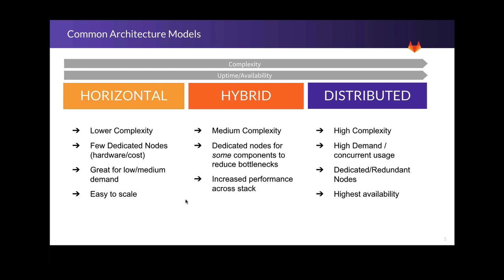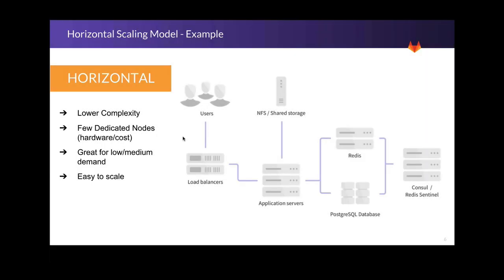We have categorized the different architectural approaches into three models based on demand and complexity. As the demand and availability needs increase, the architecture becomes more robust, but so does the complexity. The horizontal model is a common HA setup as it's the least complex. It's great for small to medium-sized demand and relatively easy to scale out. As you can see in this example, we've got a pair of load balancers that feed into two or more application servers, with two or more Redis, Postgres, and console nodes.